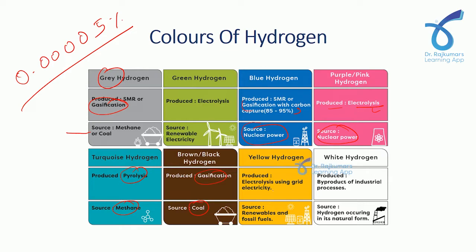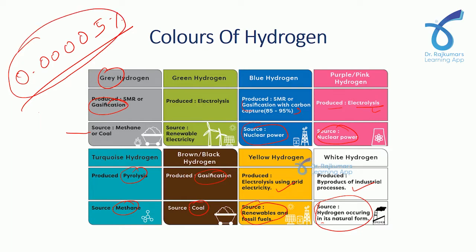Brown hydrogen uses gasification and the source is coal. Yellow hydrogen uses both renewable and fossil fuels — remember this, both renewable and fossil fuels — and it is produced by electrolysis using grid electricity. White hydrogen is a byproduct of industrial processes; the source is very rare, which is why white hydrogen is very expensive.